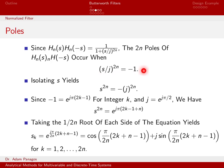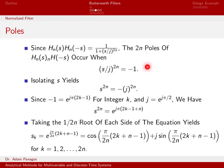Rearranging this with a little algebra, multiplying both sides by j^{2n}, we can rewrite the equation as s^{2n} = -1 · j^{2n}. All we've done is moved the j to the right side; on the left side we have s^{2n} alone.